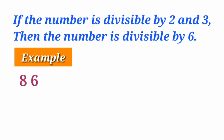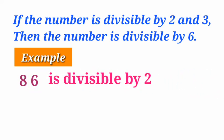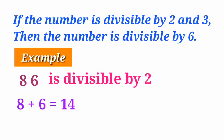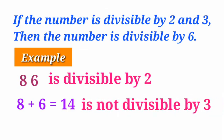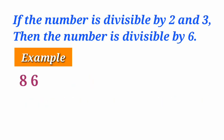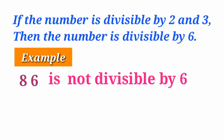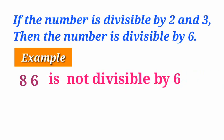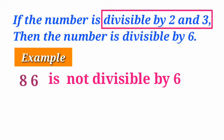Let us look at another example: 86. The last digit is 6, which is an even number, so it is divisible by 2. Now let us check divisibility by 3: 8 plus 6 is equal to 14. Since 14 is not divisible by 3, the given number 86 is not divisible by 6, because as per the divisibility rule of 6, the number must be divisible by both 2 and 3.